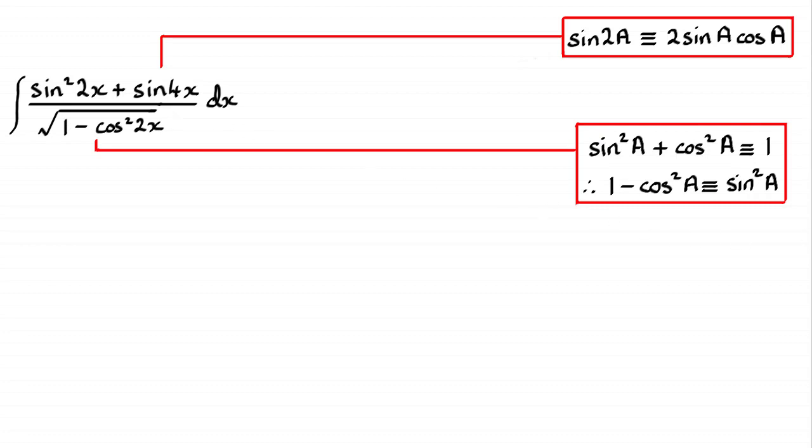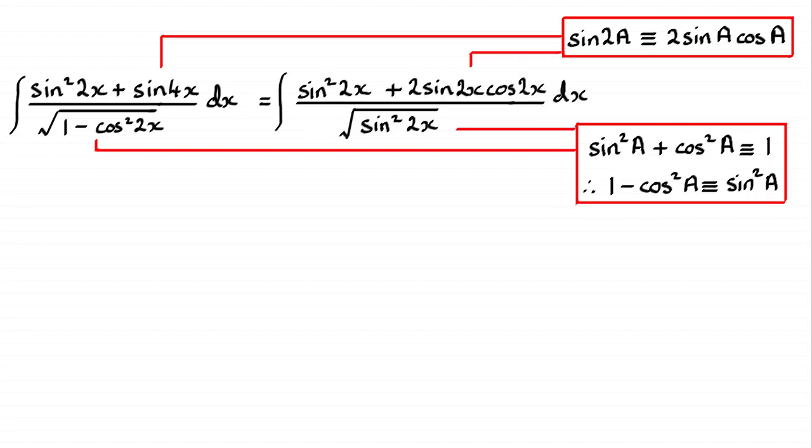So if we put those in and rewrite that integral, this is what you're going to get. Sine squared 2x, the first term, I've written sine 4x as 2 sine 2x cos 2x, all over the square root of sine squared 2x. And if we take the square root of sine squared 2x, that's going to be sine 2x.